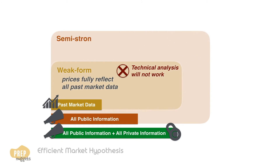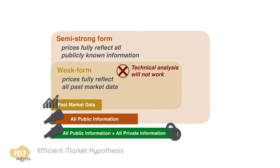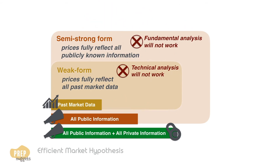One level up, the semi-strong form of market efficiency states that prices reflect all publicly known and available information, which includes past market data, which is also public information. This form of market efficiency implies that an investor cannot achieve positive risk-adjusted returns on average by using fundamental analysis, which is based on public information such as earnings, dividends, and various accounting ratios and estimates.